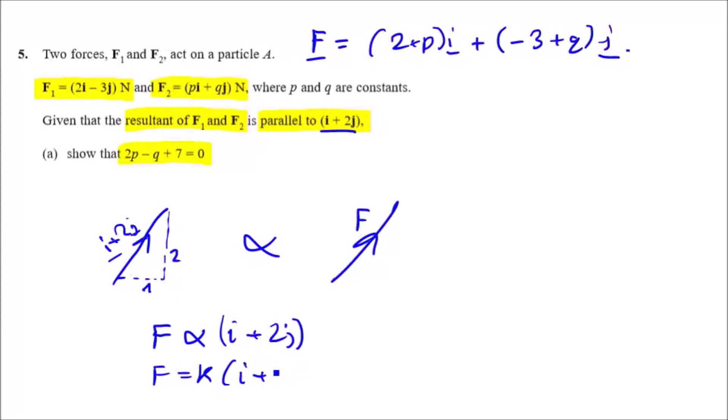Now we're almost done. All we need to do now is work in i's and j's. To do this quickly, we can say in terms of i's that the 2 plus p vector is essentially equal to some scale factor of 1.